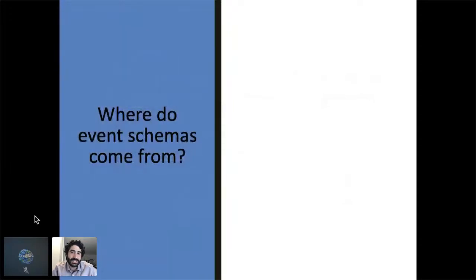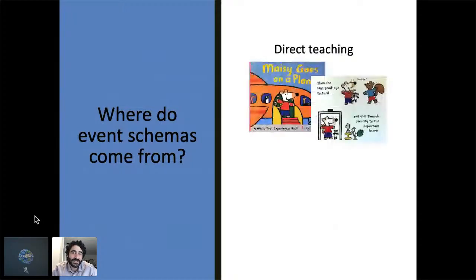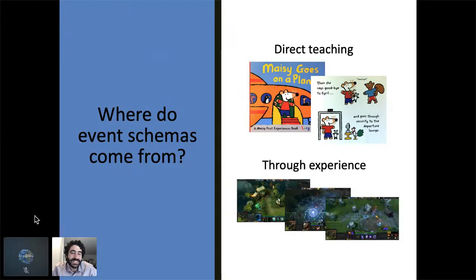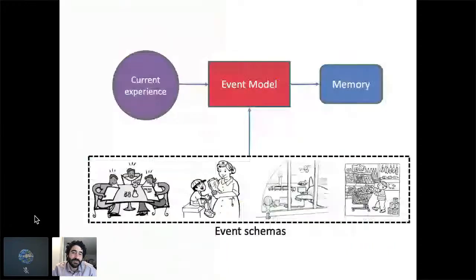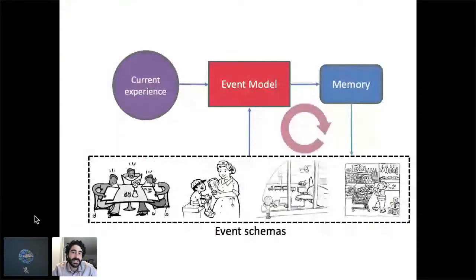One question I'm interested in is where we get these schemas from. One possibility is that we're taught them explicitly — for example, my kids have these Maisie books where there's a Maisie goes on a plane book with absolutely no plot, just a totally stereotypical airport experience. The goal of these books is to help kids feel comfortable in new situations by teaching them the schema. But I think the much more common way to learn schemas is simply through experience. All the people watching that video game tournament who were cheering probably hadn't taken a class on it — they'd watched many games and extracted what kinds of things happen and what to pay attention to. This tells us there's a loop where our episodic memories over time get built up into schemas, which then influence our later perception and memory.